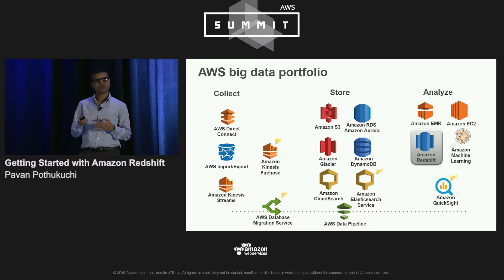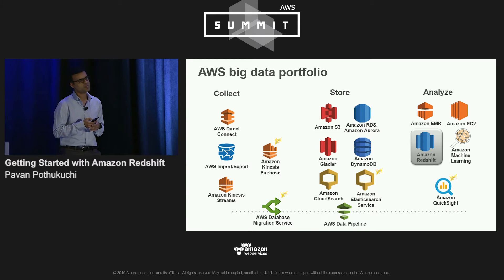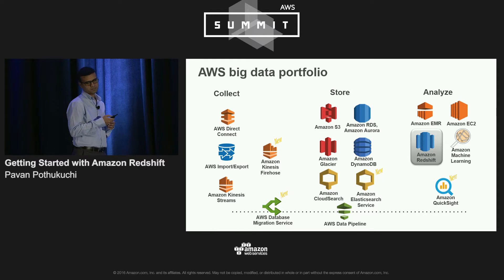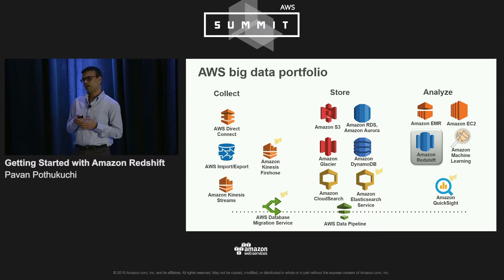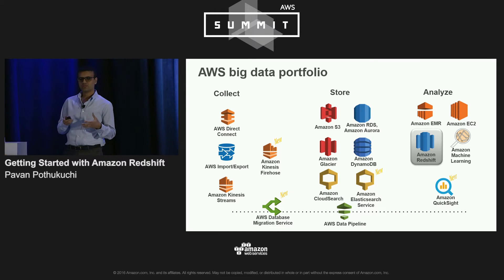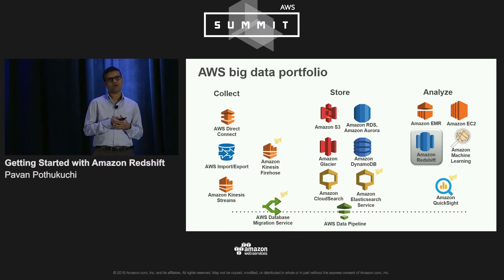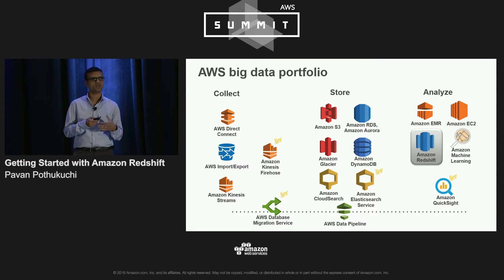Amazon Redshift is a fast, simple, and cost-effective petabyte-scale data warehouse as a service. Amazon EMR is an easy-to-use analytics platform built around the powerful Hadoop ecosystem. Amazon Machine Learning is a service that was internally used within Amazon.com for use cases such as a recommendation engine, and has been externalized for about a year. Amazon QuickSight is a cloud-powered business intelligence service that enables end users to build visualizations, create storyboards, and share insights with others in their organization.